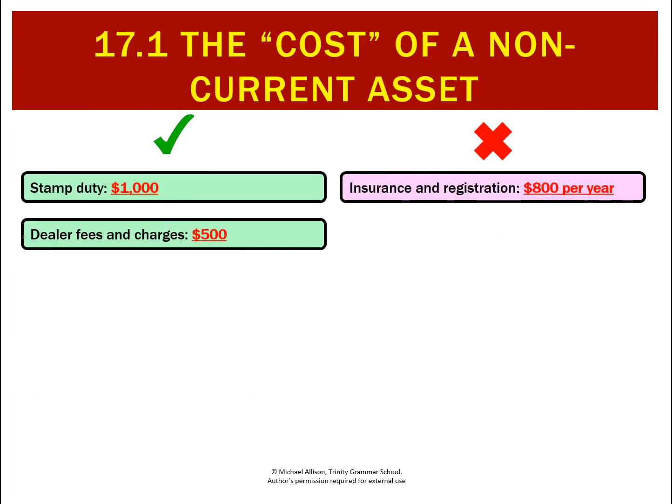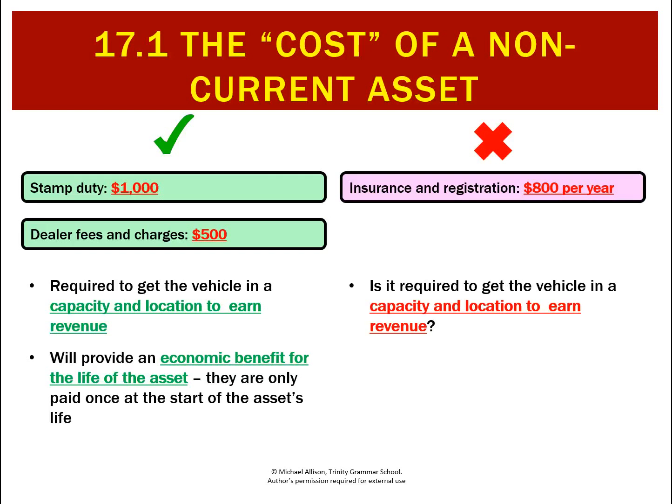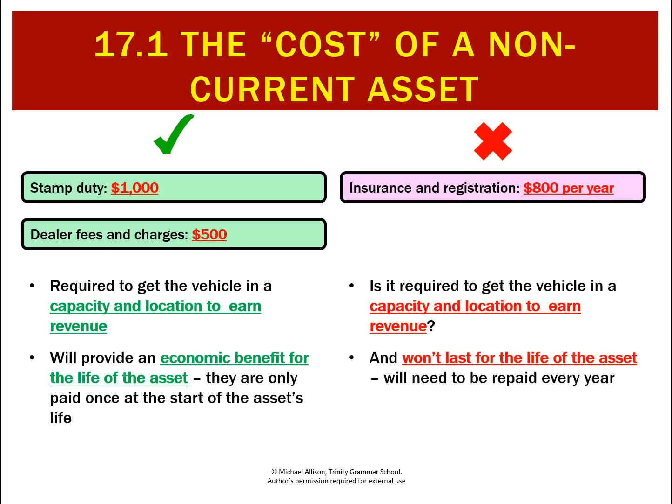Why did we include the stamp duty and dealer's fees as costs? Because they're required to get the car in a capacity and location to earn revenue and they provide an economic benefit for the life of the asset — they're only paid once at the start of the asset's life. Whereas the insurance: is it required to get the vehicle in a capacity and location to earn revenue? That's debatable, but even if true, it's not going to last for the life of the asset — we need to repay it every year.